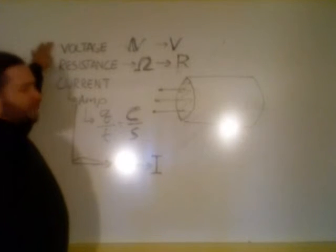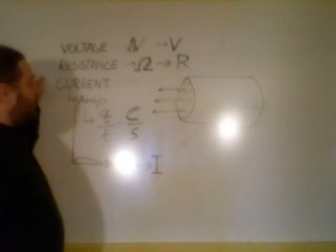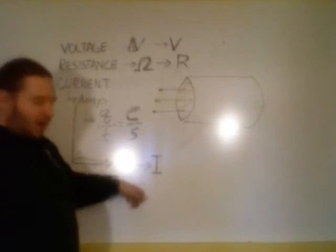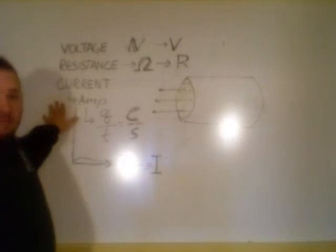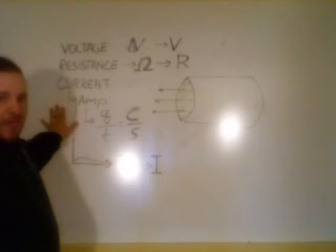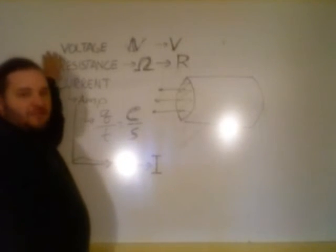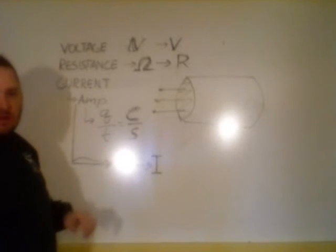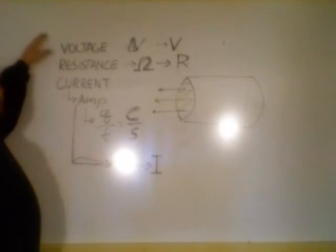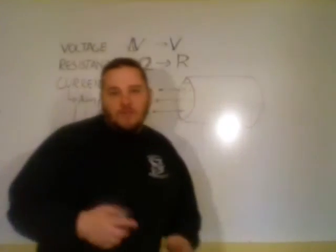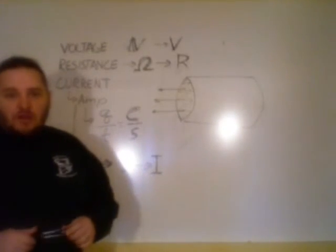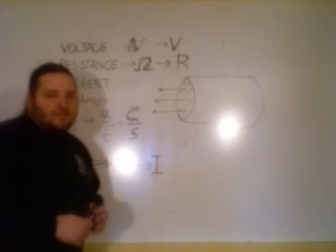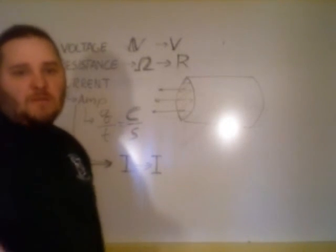So to summarize: voltage is V, resistance is R, and current is I. Current, measured in amps, is a base unit. Resistance is not a base unit — we can derive its units from Ohm's Law. Voltage is certainly not a base unit; it's joules per coulomb. That is the vocabulary we need to talk about properties of circuits.